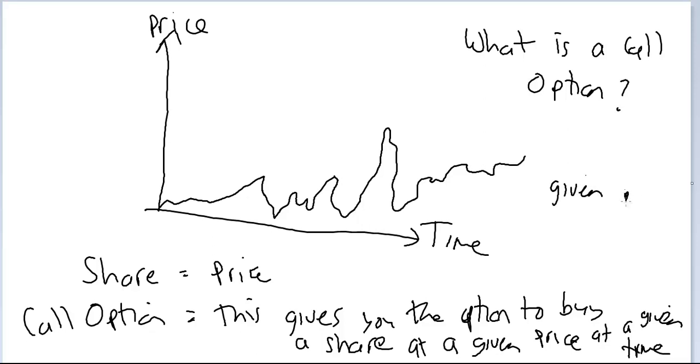So the given price is called the strike price. I'm putting it in capitals for emphasis. So I'm going to say you have bought a call option on, say, using this time scale, and I've decided to buy a call option at that price.